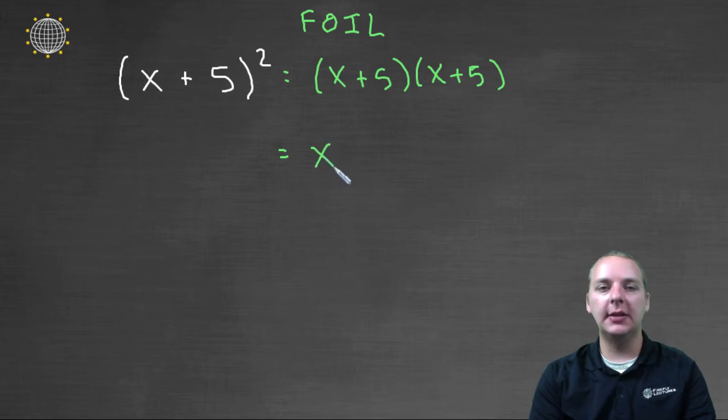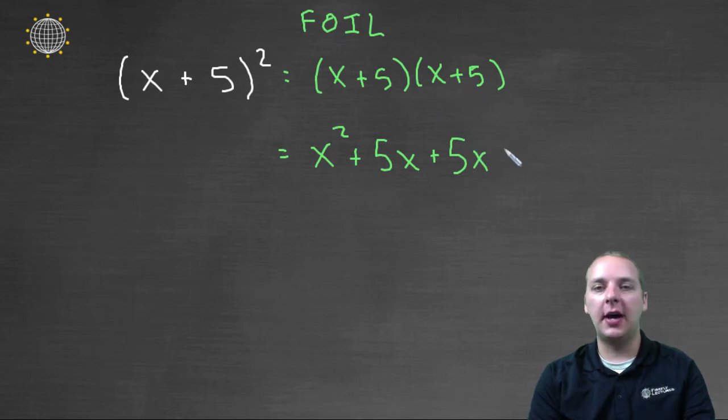X times x is x squared. The outer is x times five, that'll be five x. The inner would be five times x, that's also five x. And five times five makes twenty-five, and that's the L, that's the last.